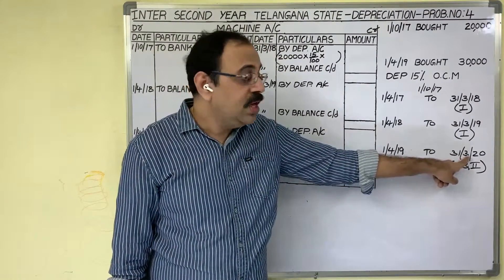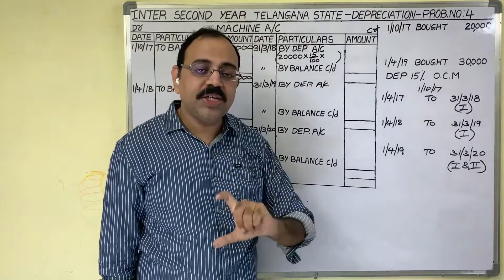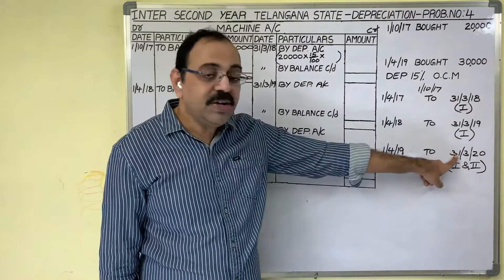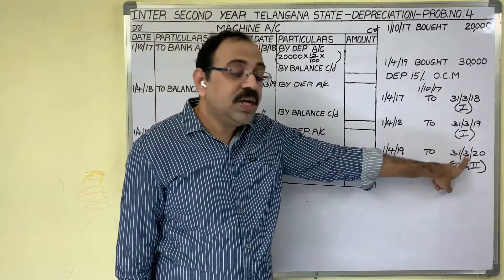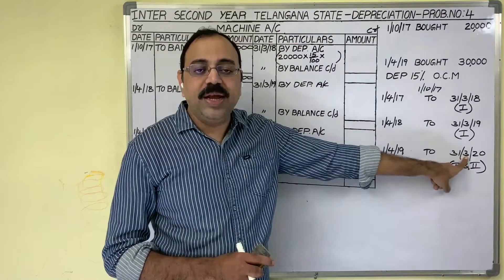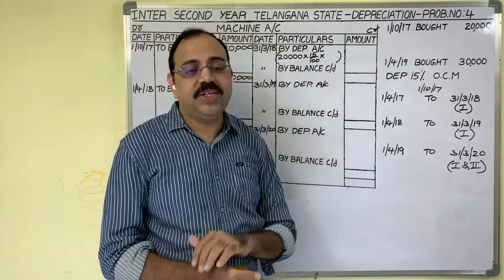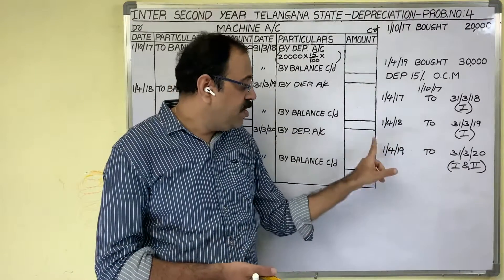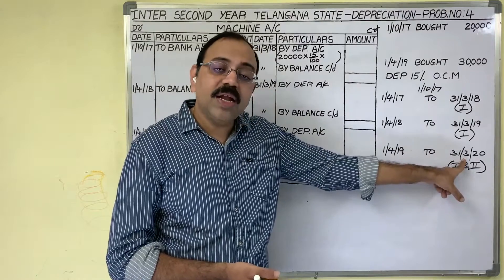The question is not specifying which year the firm is following — financial year or calendar year. But by seeing this date we can guess. Since the last date of the year is 31st March, it gives the meaning that the firm is following the financial year. Financial year starts from 1st April and ends with 31st March.